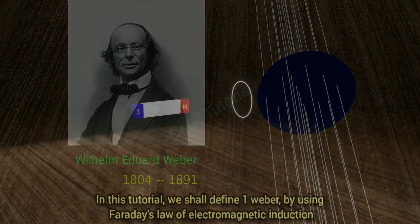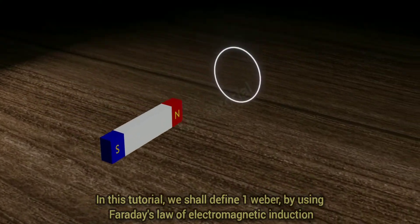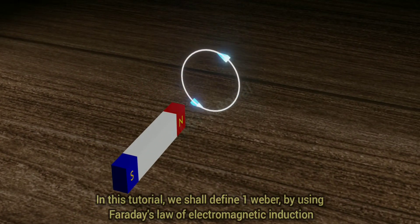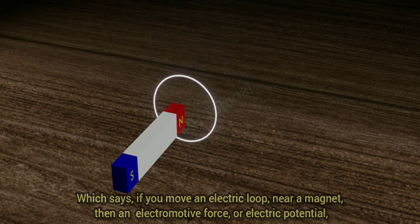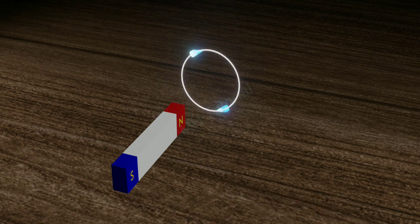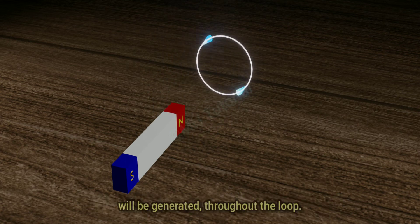In this tutorial we shall define one Weber by using Faraday's law of electromagnetic induction, which says if you move an electric loop near a magnet then an electromotive force or electric potential will be generated throughout the loop.